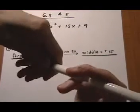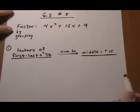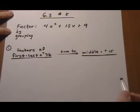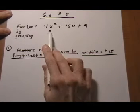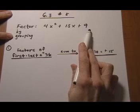Section 6.3, number 8. Here we have a trinomial and we want to factor it by grouping. The first thing we want to do is figure out how we can make this four terms, because that's what we need to factor by grouping.